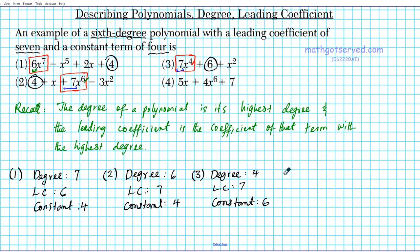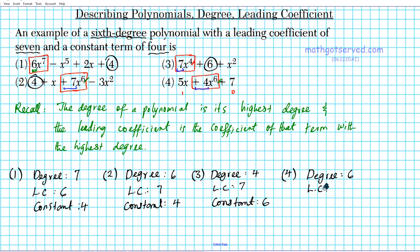Option four is a sixth degree polynomial with three terms. The term with the highest power is degree six. The powers of the other terms are one and zero. So the degree is six. The leading coefficient is the coefficient of that term, which is positive four. And the constant term is seven.